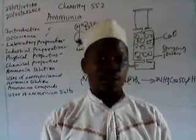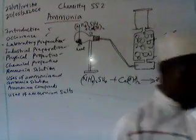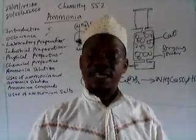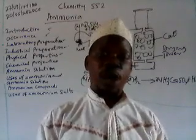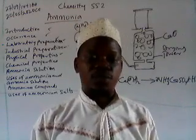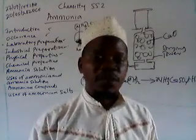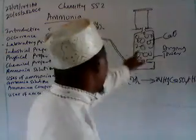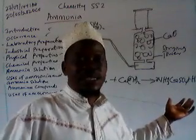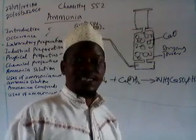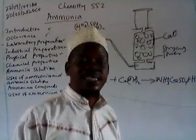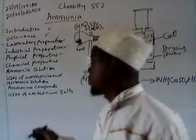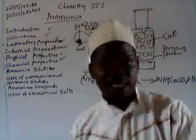Ammonia is soluble in water due to the presence of hydrogen bonds between the molecules. Ammonia gas turns red litmus paper blue — that is about the only gas known to have that characteristic. So, once a gas turns red litmus paper blue, we can have high assurance that it is most likely ammonia. It is also lighter than air, and that is why it is collected by upward delivery. Its relative molecular mass is 17, far less than the relative molecular mass of air, giving it a relative density of 8.5. Because it is highly soluble in water, it cannot be collected over water.